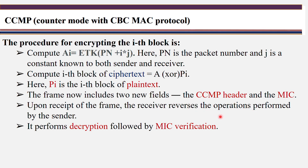This is how data is protected. For data protection, two terms are used: confidentiality — to privately and securely send data, encryption is used — and integrity, for which different types of integrity functions are used. Using these three different security protocols — WEP, WPA (TKIP), and WPA2 (CCMP) — confidentiality and integrity are provided. Thank you.